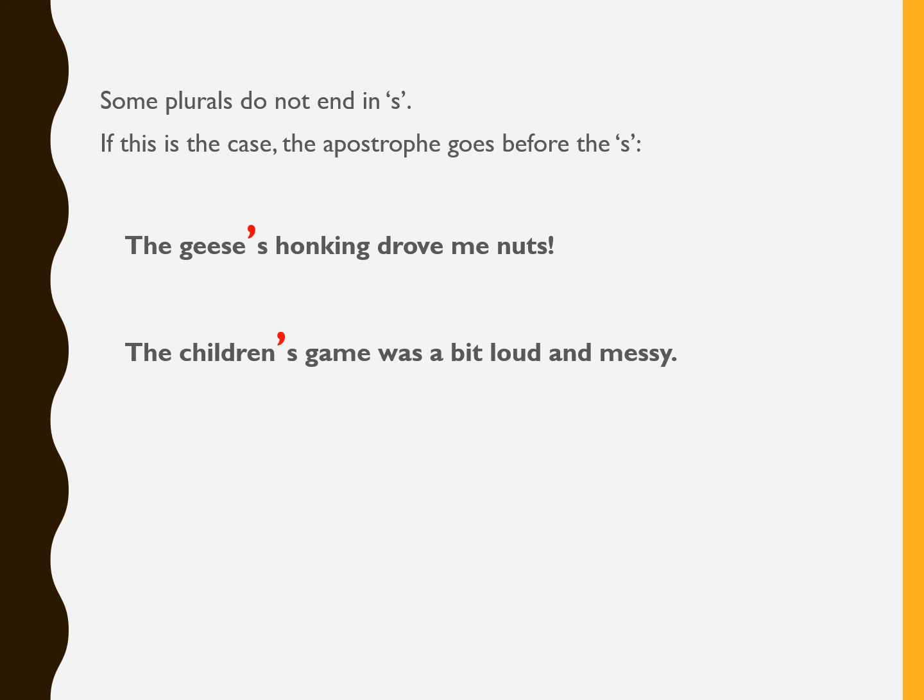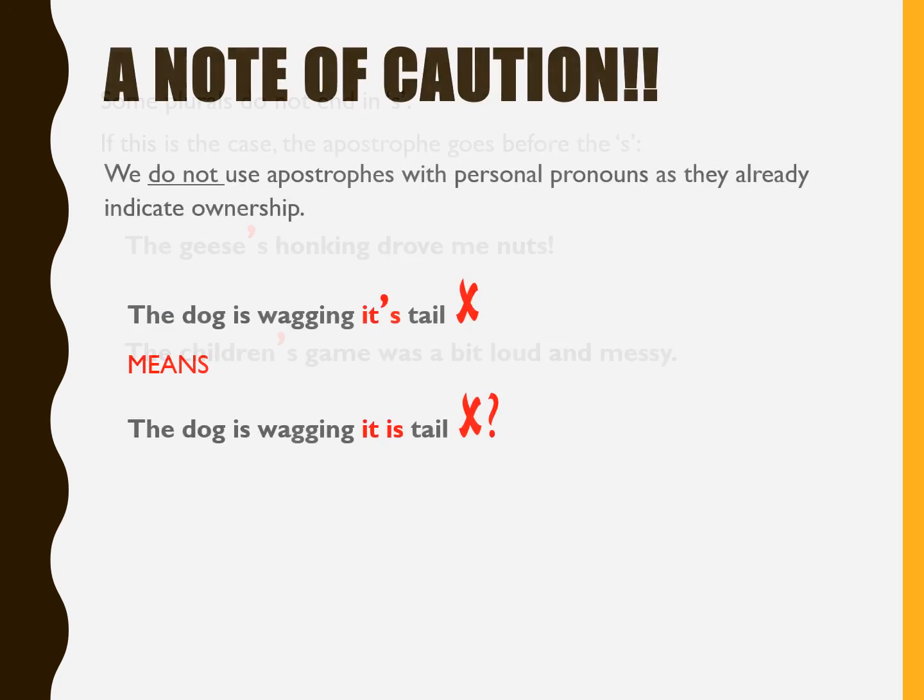Some plurals don't end in s — like 'geese' or 'children' — and in those cases the apostrophe goes before the s. Also remember: 'it's' with an apostrophe means 'it is,' while the possessive 'its' has no apostrophe. For example: 'The dog is wagging its tail' — no apostrophe.